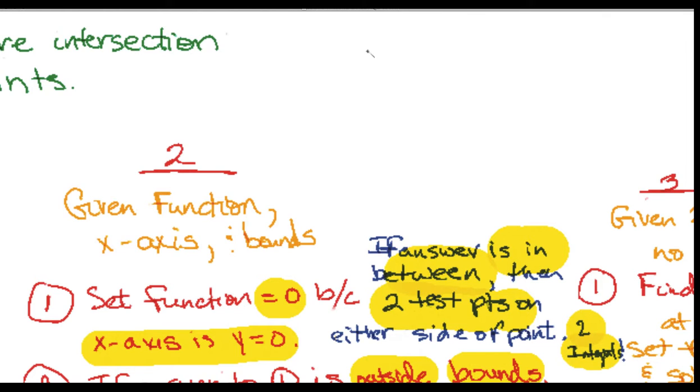If it was inside, again that's going to look something like this: here's your function, it goes through the x-axis, and we were looking let's say between this value and this value. You can clearly see that this region the x-axis is on the bottom and the function is on top, whereas it's vice versa here. So we would need two test points: one between the lower bound that was given and that intersection point in between, and then the other one between the upper bound and that same intersection point.